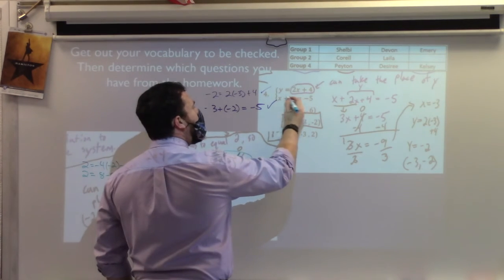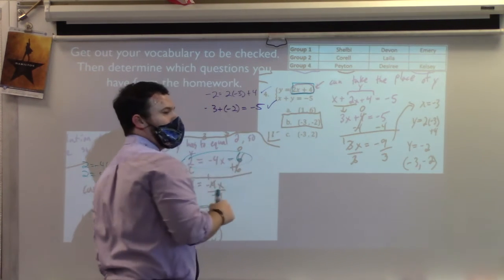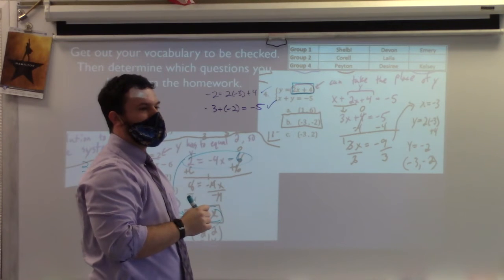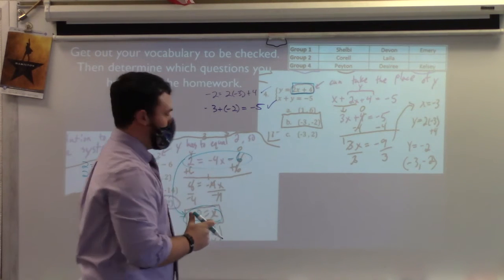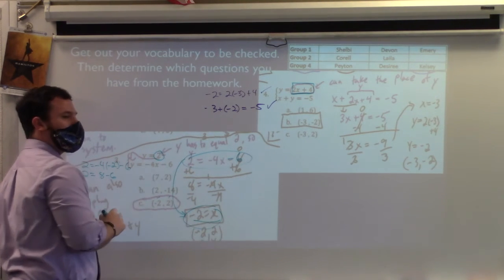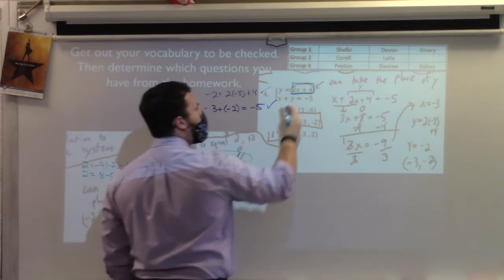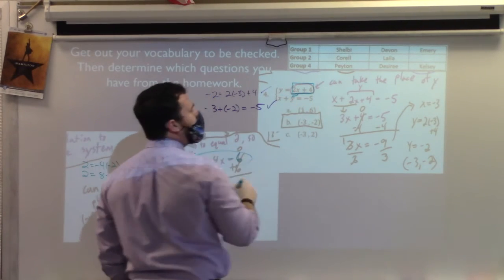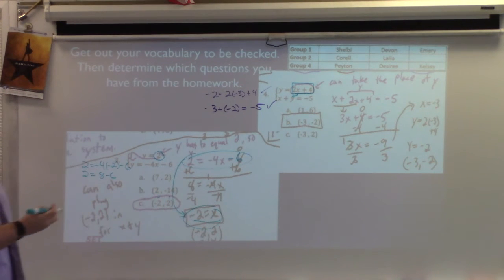But notice in this one, I don't have y equals a number, but I do have y equals 2x plus 4. So what could that 2x plus 4 take the place of? The x and the y. The x and the y. What is it equal to? Y. When it was y equals 2, what could take the place of y? 2. So when it's y equals 2x plus 4, what can take the place of y? 2x plus 4. I'm substituting that in for y. That's what we really call that. Anyone want to take a shot in the dark? What that method would be called, where we substitute something in? Substituting? Close. Substitution. Substitution. Wow, that was a brain tickler.